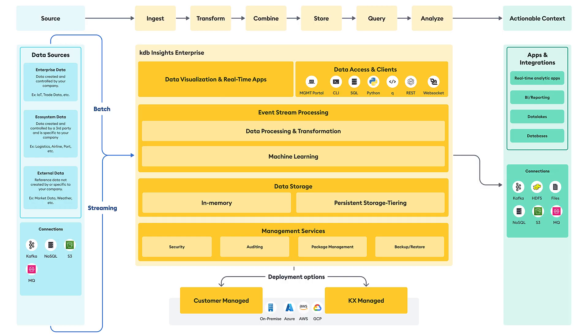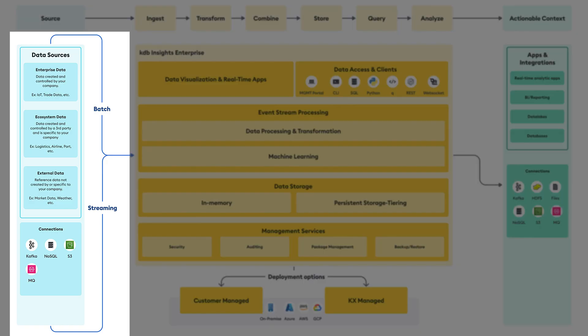To better understand how KDB Insights Enterprise actually works, let's take a look at the architecture. Here we have a simplified diagram to guide us, and we can see it can be broken down into several key components. Firstly, there's data ingestion — this layer is responsible for collecting data from various sources. It can handle streaming data, batch data, and historical data, ensuring comprehensive data coverage.